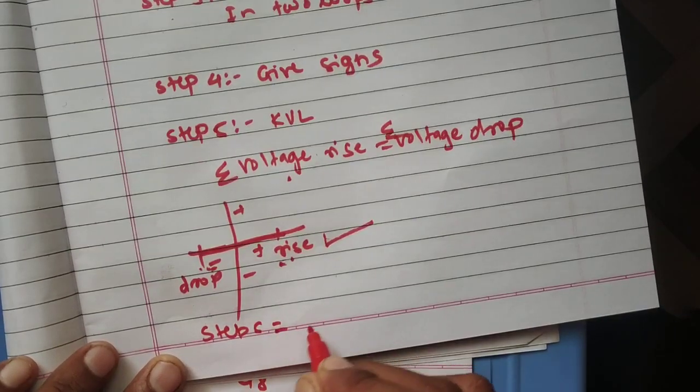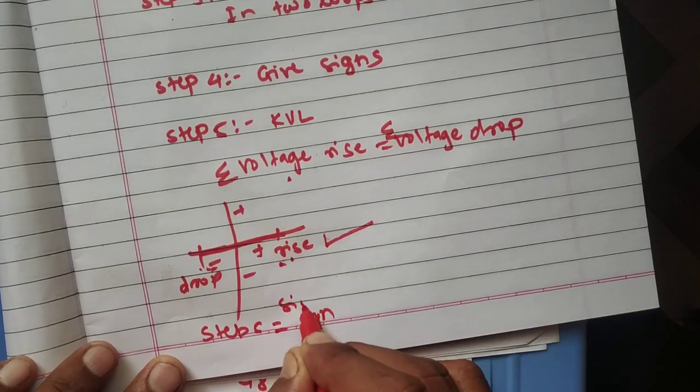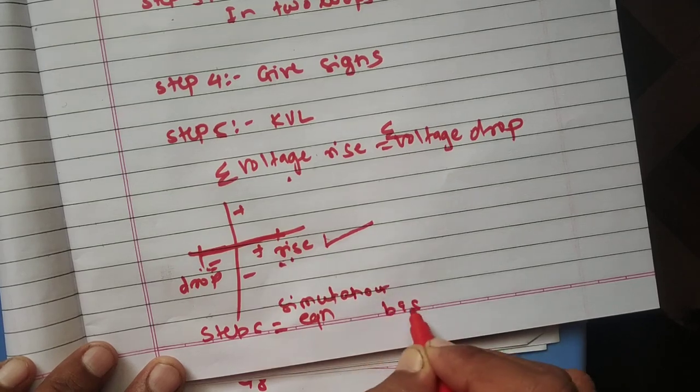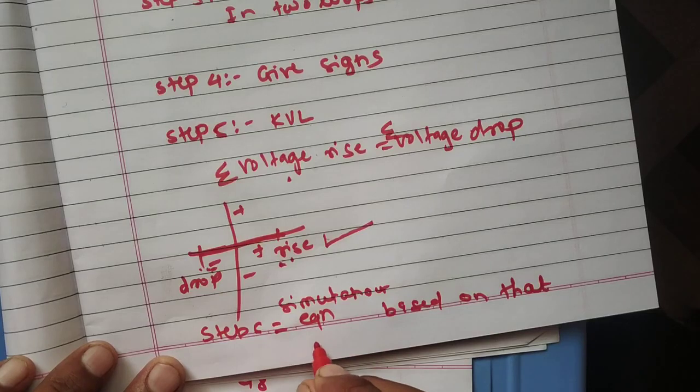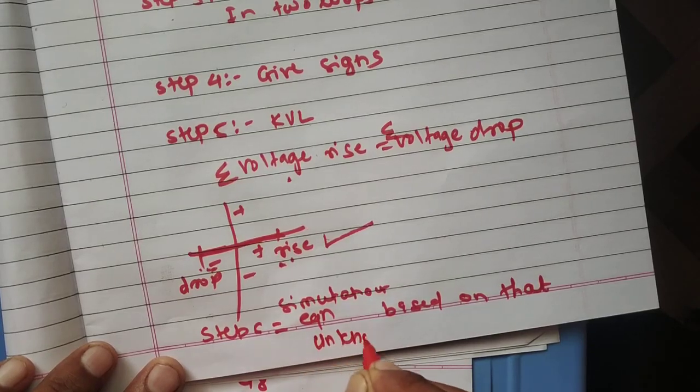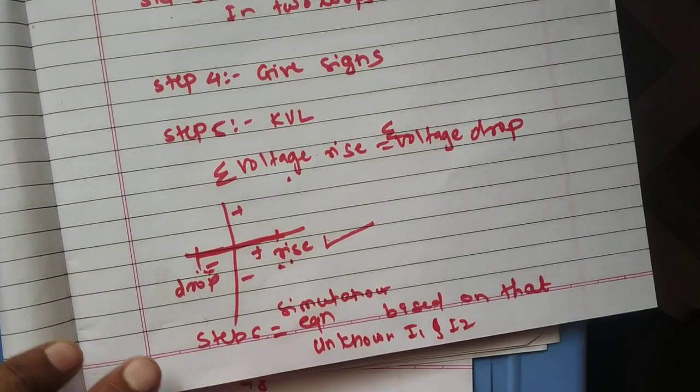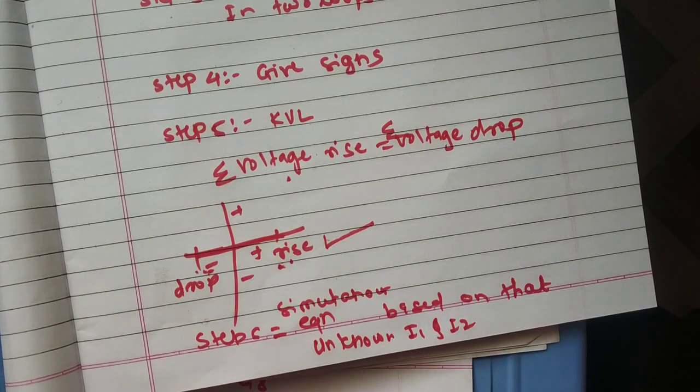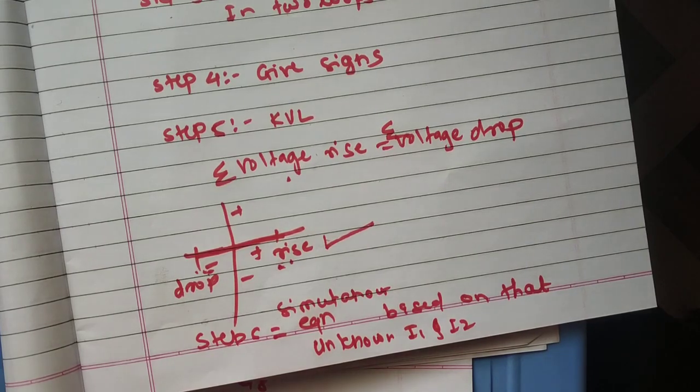The equations formed are simultaneous equations. Based on that, unknown values are found. The unknowns are i1 and i2. Simultaneous equations are generated and by solving them, the unknown values are found.